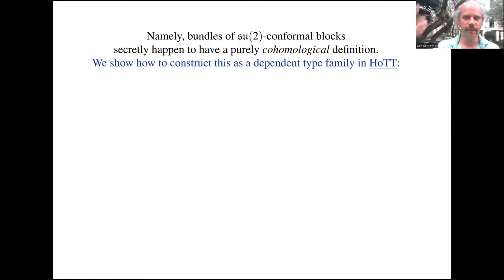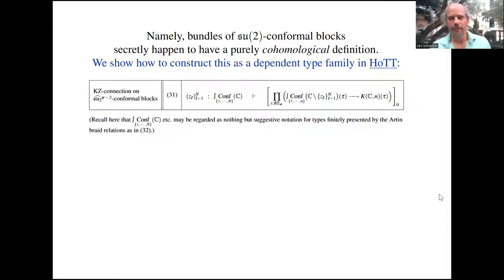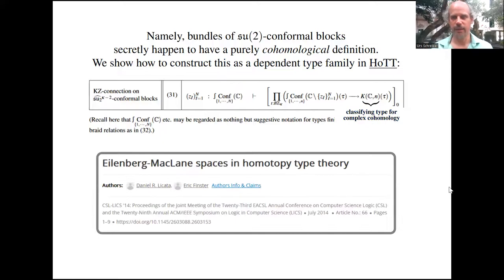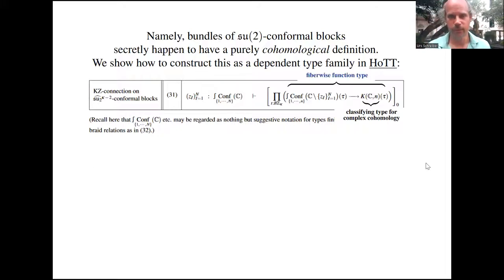We show how to construct this construction of conformal blocks as a dependent type family in homotopy type theory. Here's that formula, that code. Let me indicate some key inputs. The thing on the right is notation for an Eilenberg-MacLane space. This needs to be the classifying type for complex ordinary cohomology in degree n. Such types are naturally, easily constructed in homotopy type theory. I'm showing an article from a few years back that does this. In ordinary algebraic topology, these types are such that homotopy class of maps into them give cohomology groups.